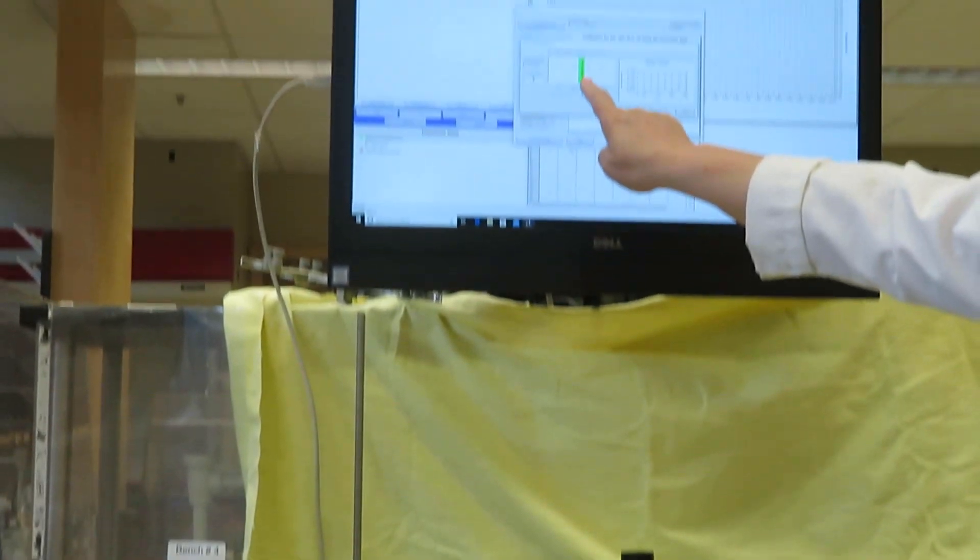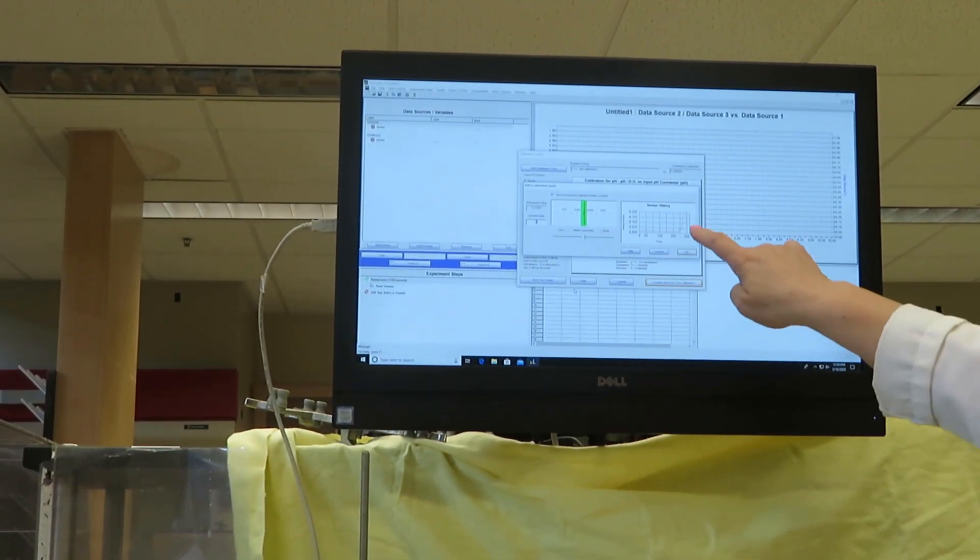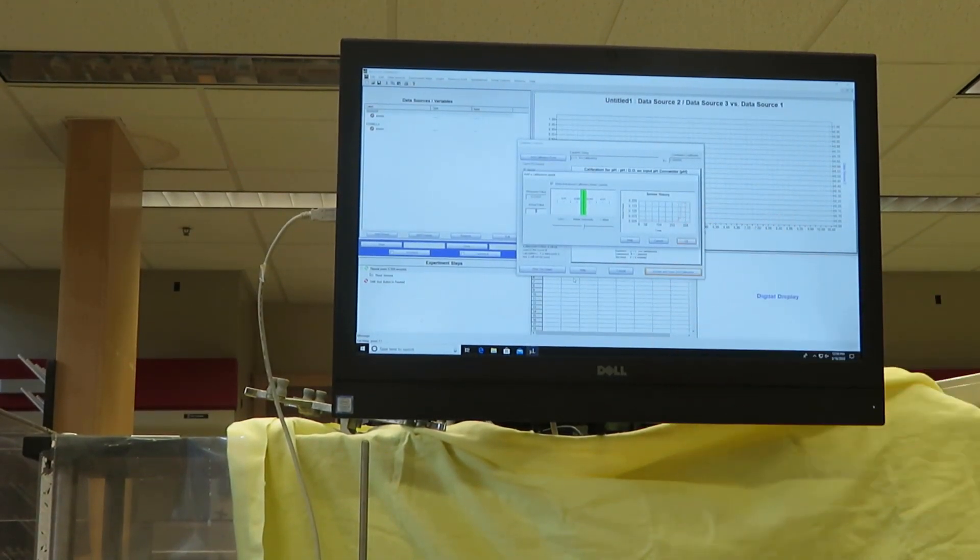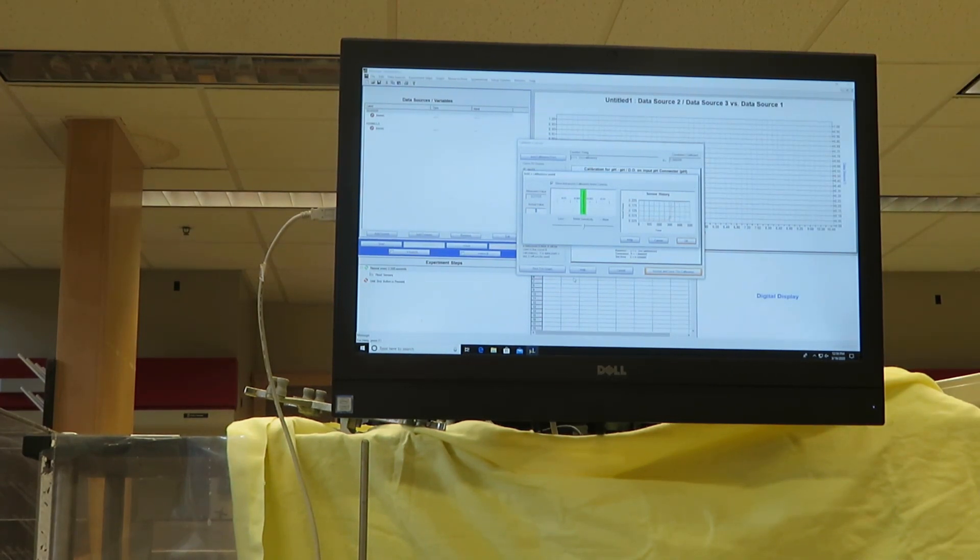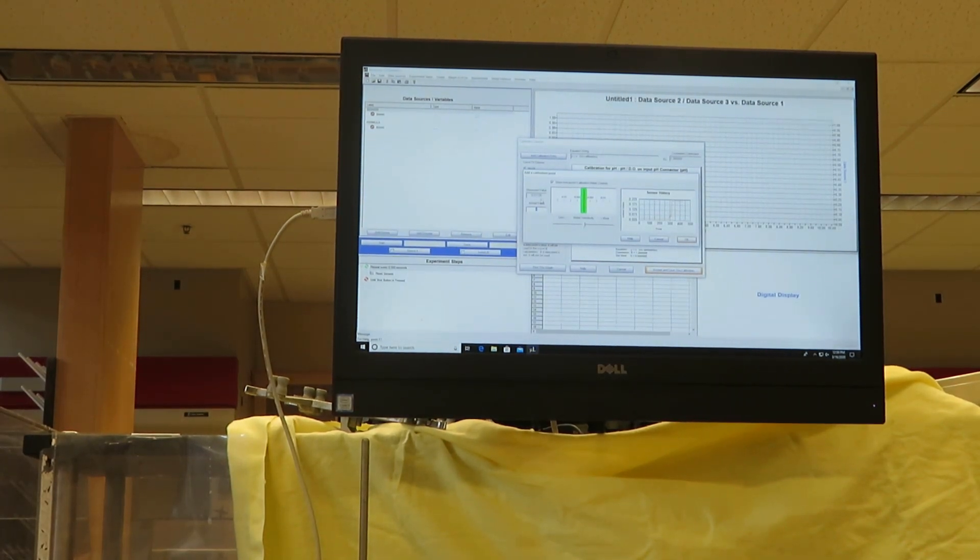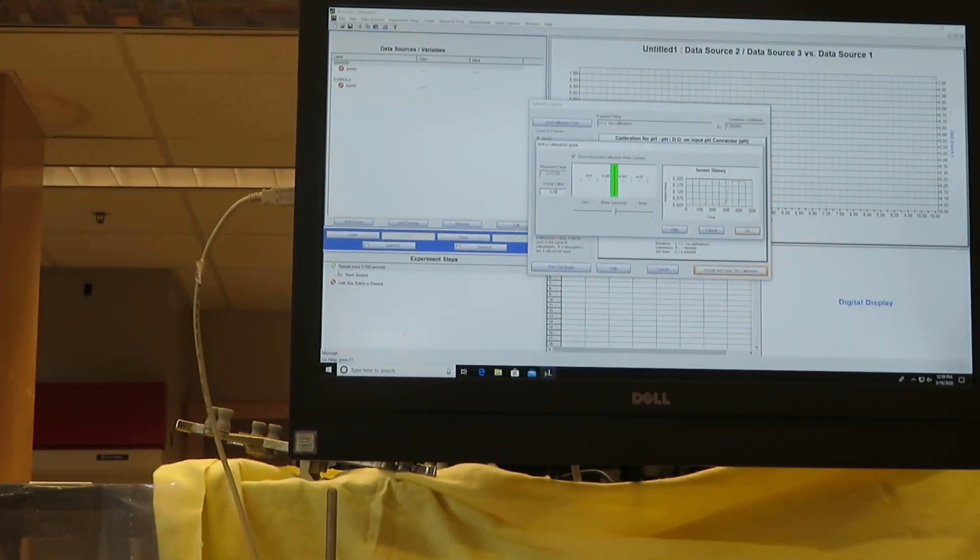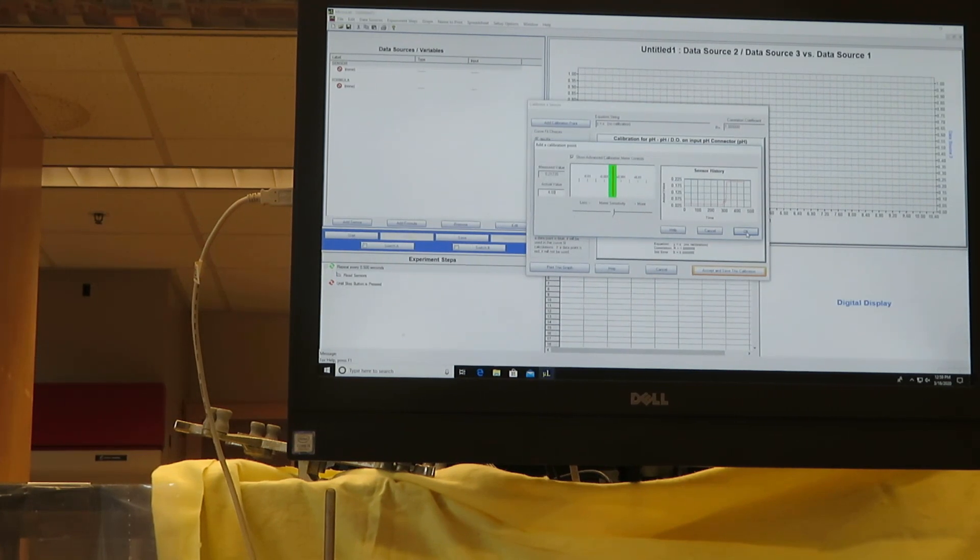What you see is that it's taking a moment to adjust. The millivolts has changed significantly. Let me give it a little stir to make sure it's leveling. At this point the measured value is not changing very much, so I can enter 4.00. That will be my first point.